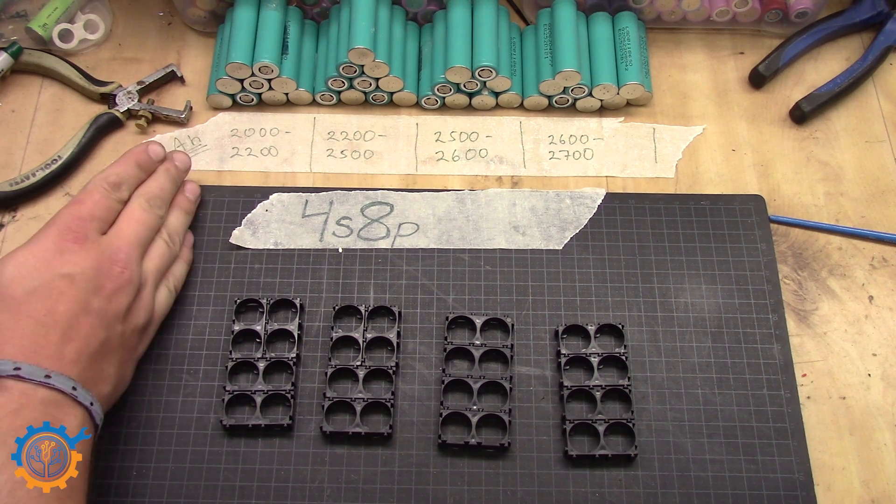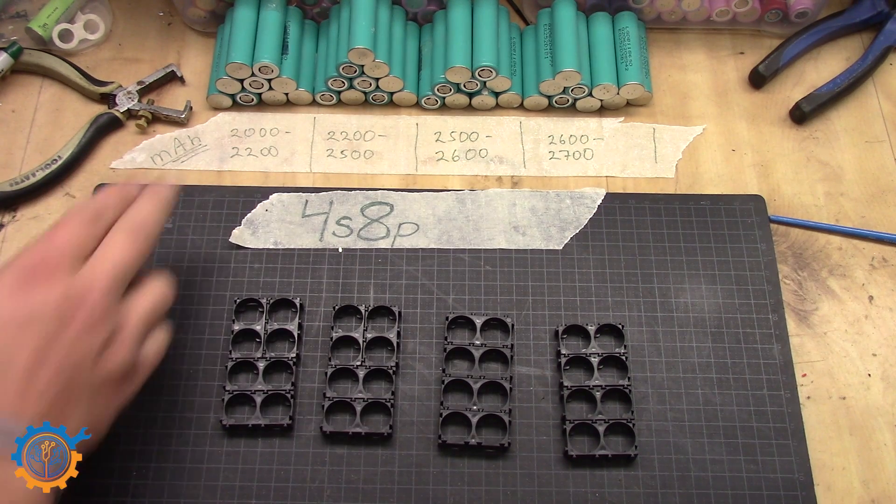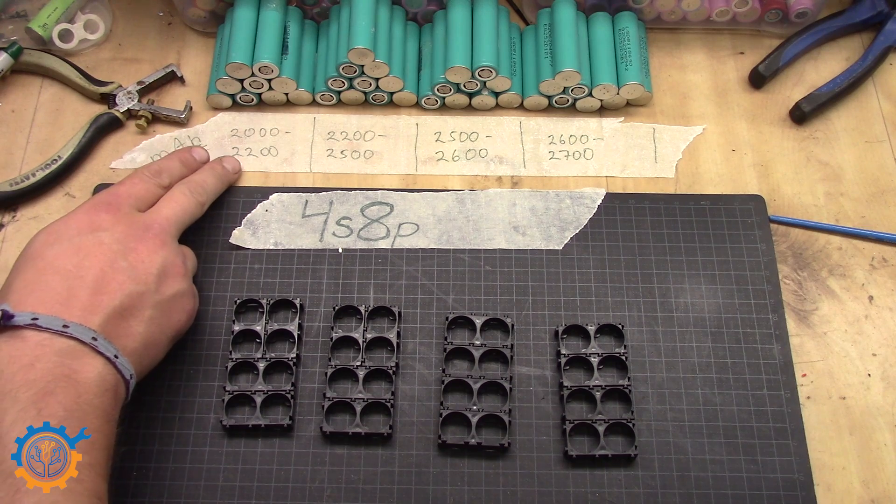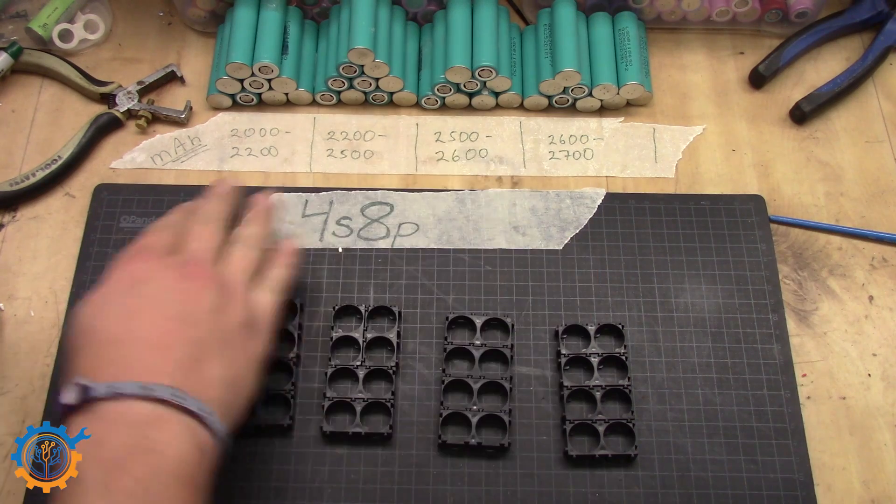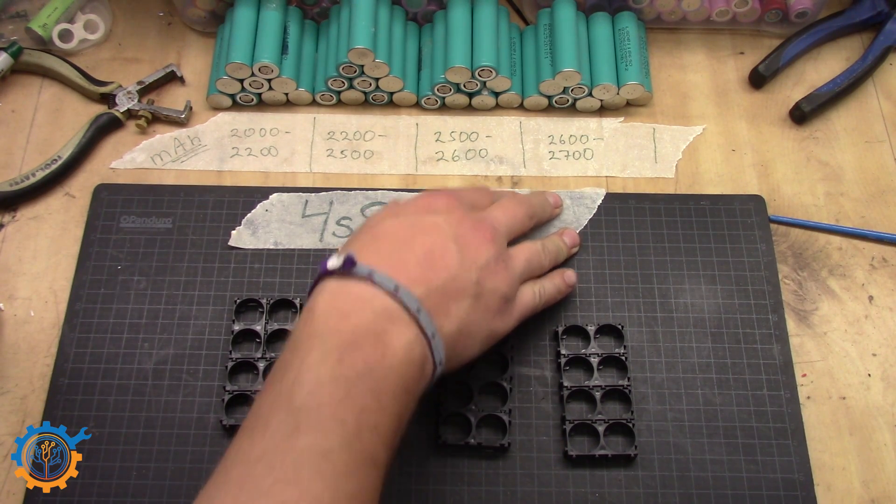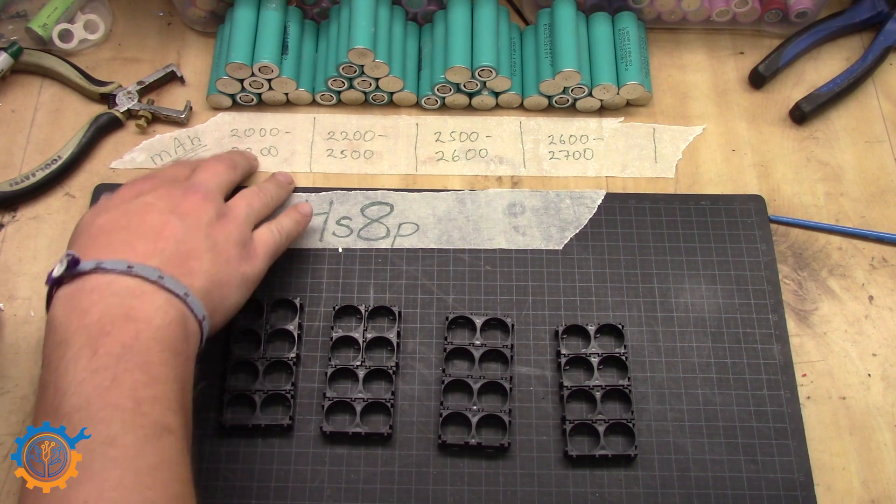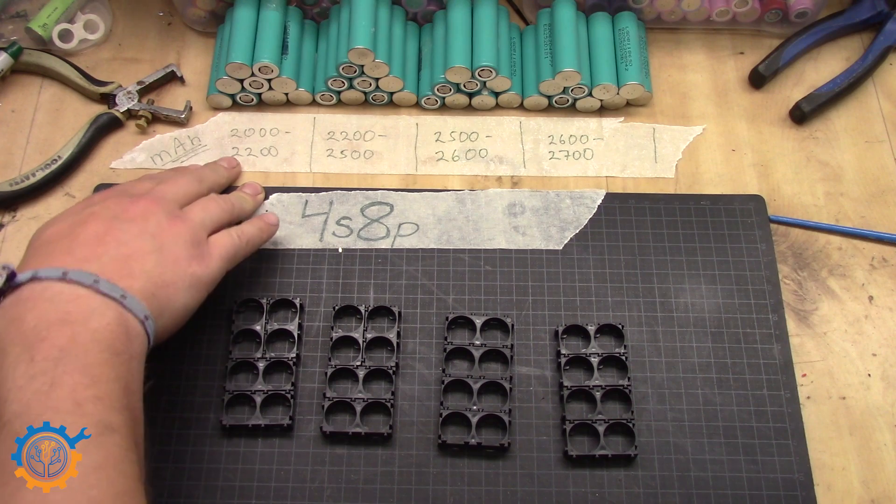And here I have arranged the cells in capacity ranges. Generally I do 100mAh between every capacity range. But this is what I had to play with today and therefore I also have arranged them in such a way. The highest to the lowest. And I have decided to not go under 2Ah today. So that's where I'm going to end up.